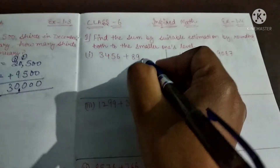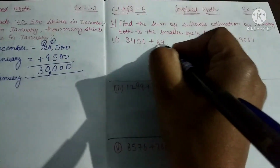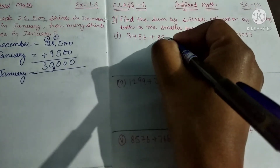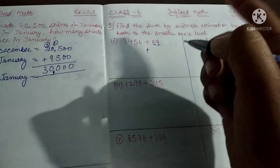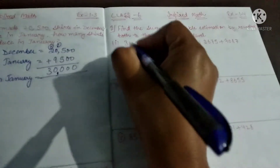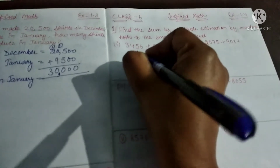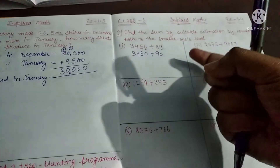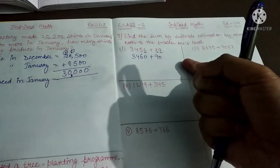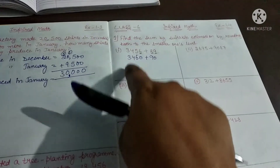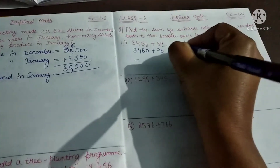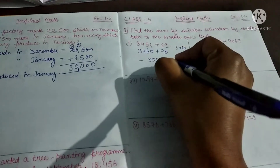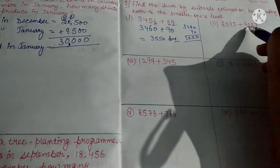Here 89 means we have to observe the ones digit and add 1 to the tens, making it 90. For 3456 — it is 6, which is between 5 to 9, so we add 1 to the tens place, making it 3460. Now add both: 3460 plus 90 equals 3550. That is the answer. In both numbers the level is ones, tens, hundreds, thousands.